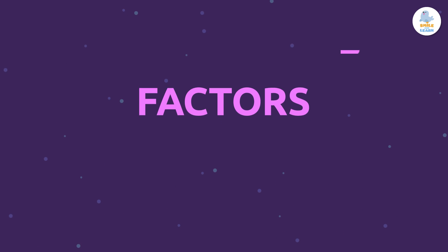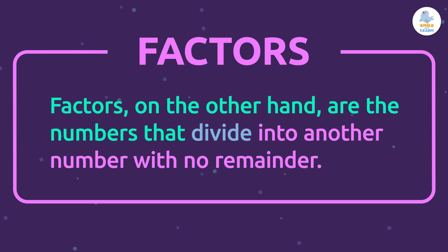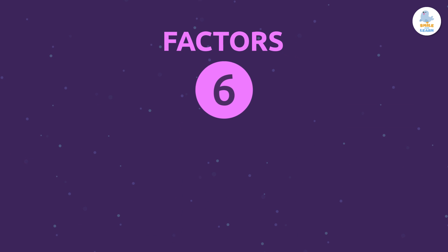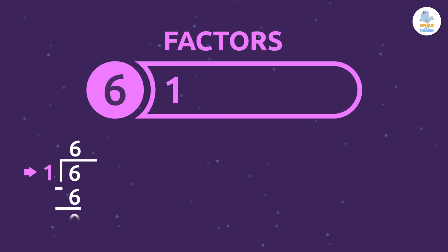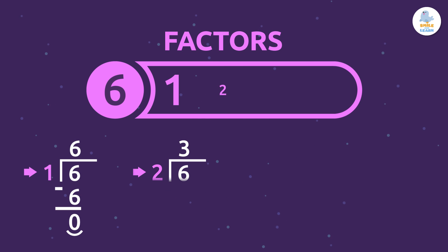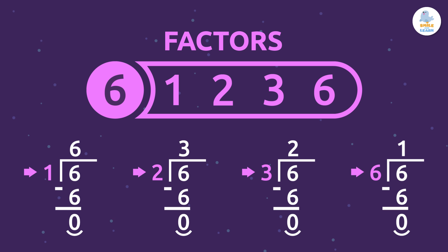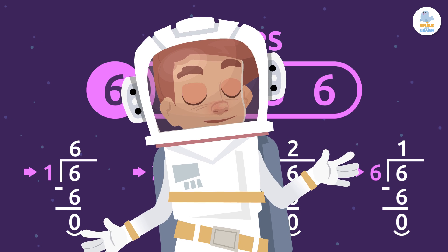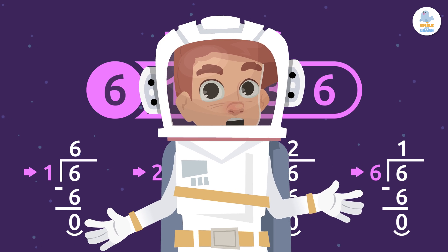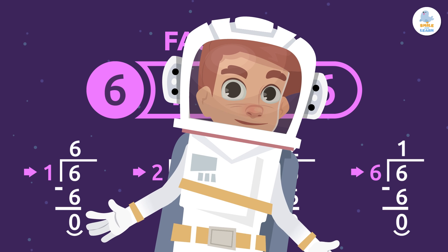Factors, on the other hand, are the numbers that divide into another number with no remainder. For example, the factors of the number 6 are 1, 2, 3, and 6. In math, factors and multiples are the exact opposites.